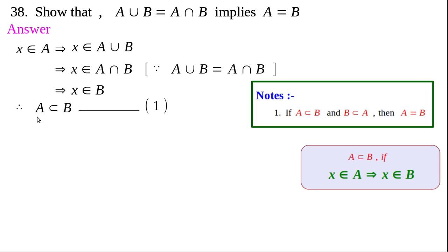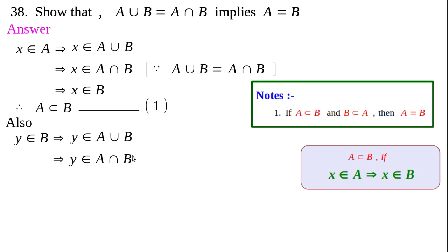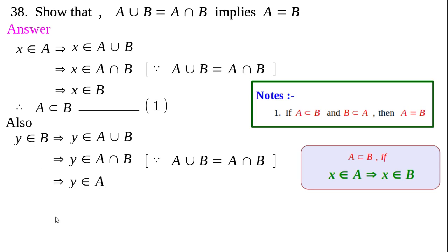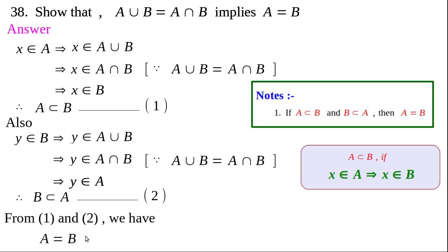Similarly we can prove B⊂A. Take y∈B. Clearly y∈A∪B, and since A∪B = A∩B, we replace A∪B by A∩B. Since y∈A∩B, y belongs to both A and B, so y∈A. Therefore whenever y∈B then y∈A, meaning B⊂A. That is our second result. Since A⊂B and B⊂A, we conclude A = B.